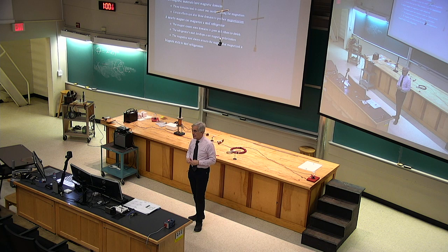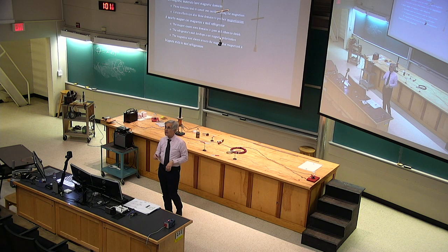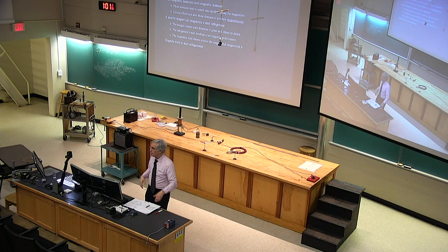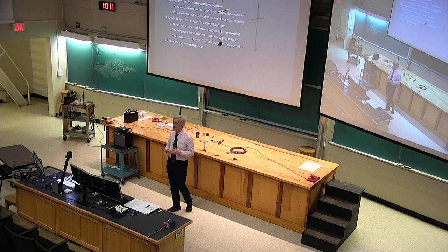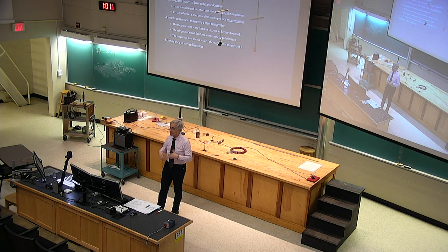I then talked about the origins of the magnetism we see in objects and materials, being primarily due to their electrons — the fact that electrons are intrinsically magnetic. They don't have a net pole, but they have a net dipole. They have a north pole and a south pole, and it's associated with the fact that they also have angular momentum.